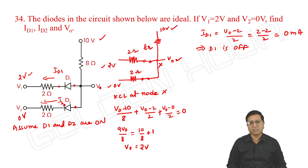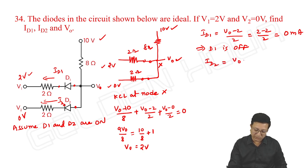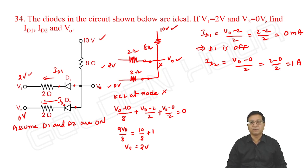If we get negative or 0, D1 is off. If it is positive, then only we can say diode D1 is on. For ID2, it is V_output minus 0 by 2, which is 2 minus 0 by 2, giving 1 ampere. So ID2 is equal to 1 ampere.